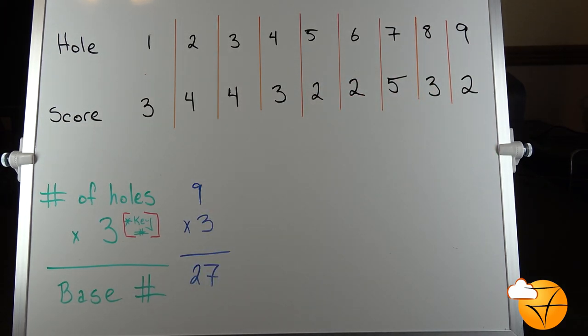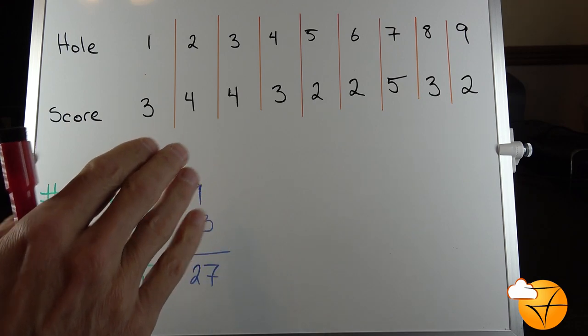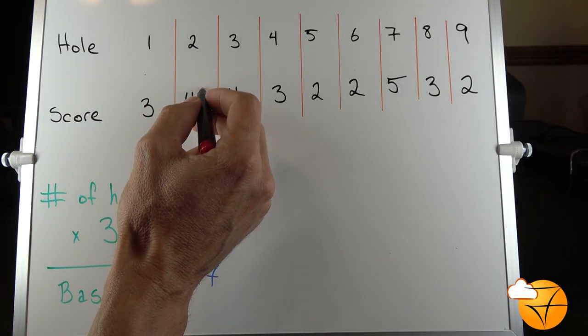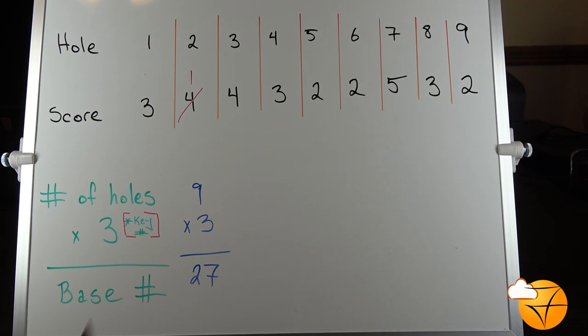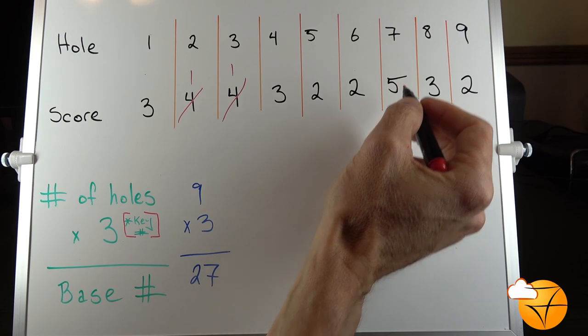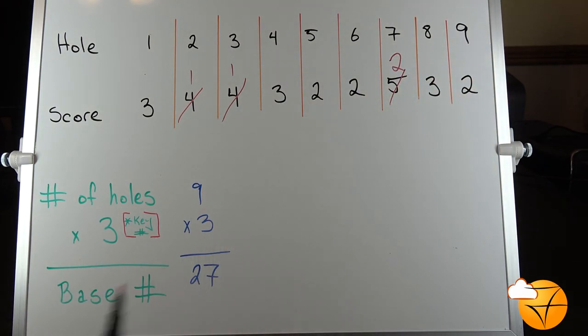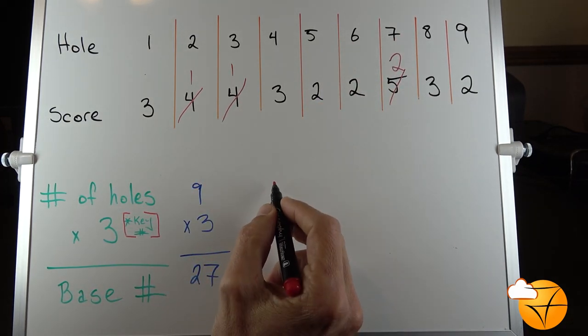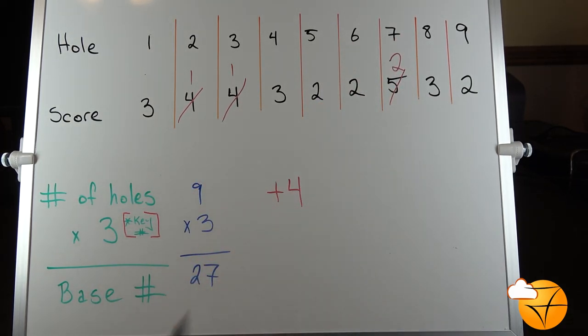Any score that is above or below three, this is going to be our focus. So we will start with holes above a three. Here we have a four—that's one above the three. One above the three. And here we have a five—that's two above the three. So we add those up: one, two, three, four. That gives us plus four.